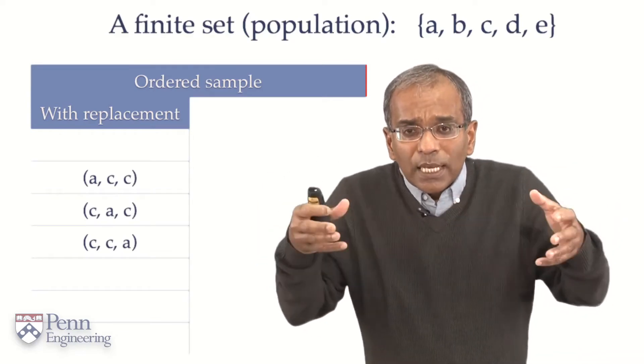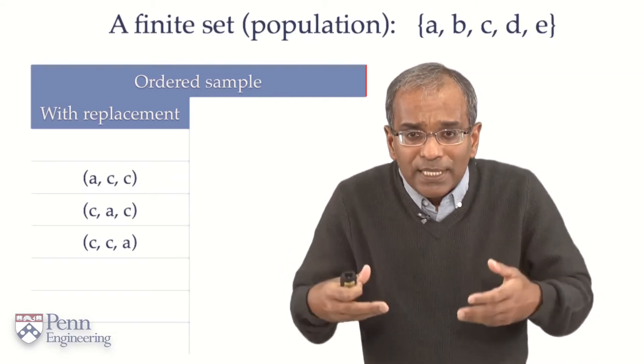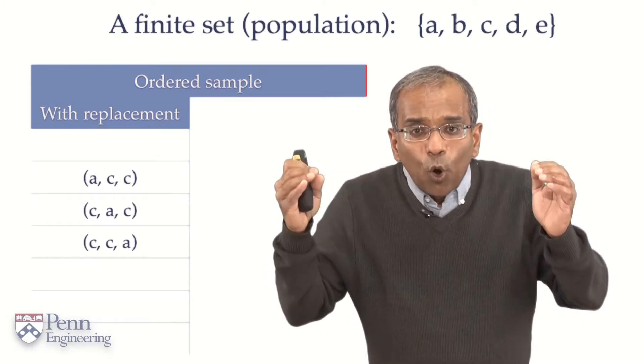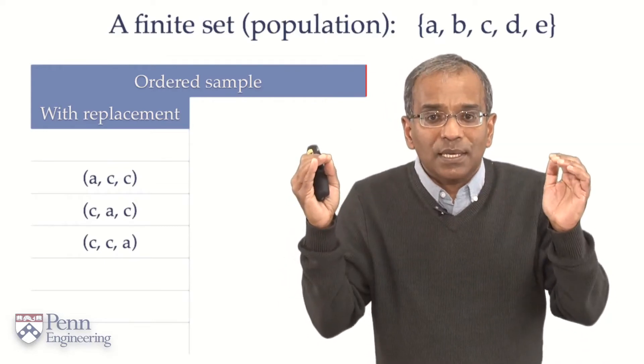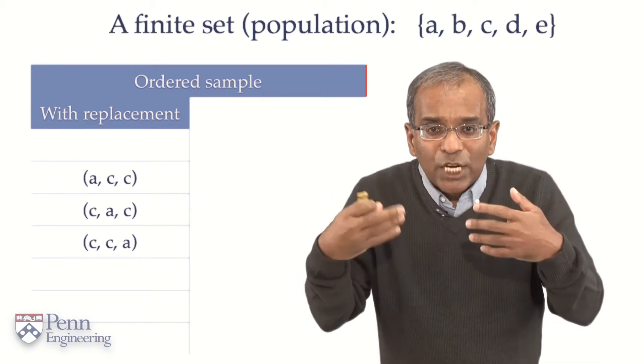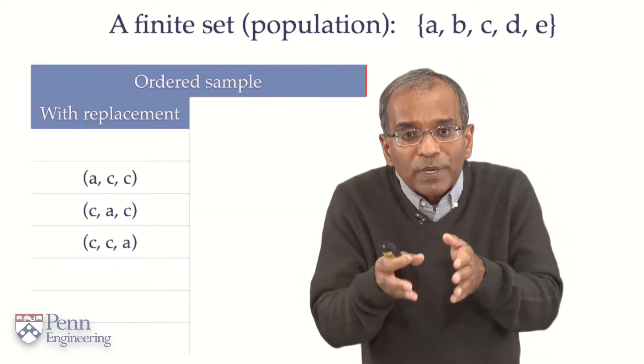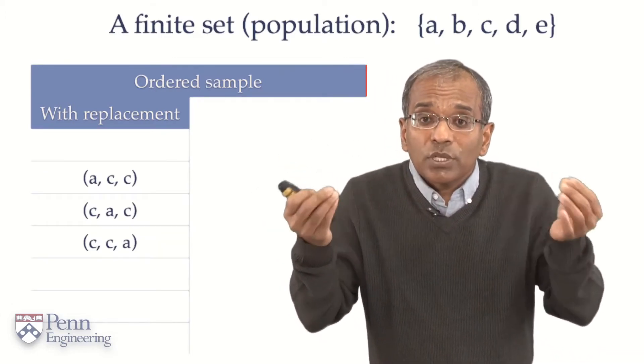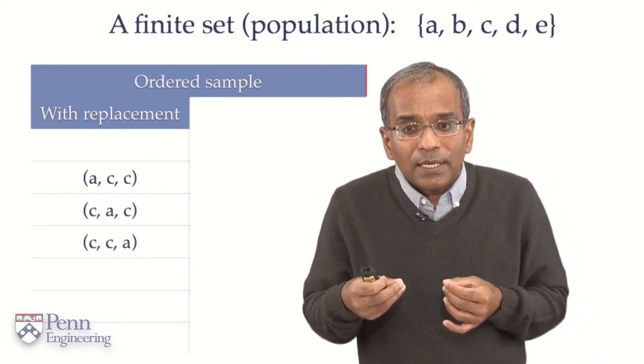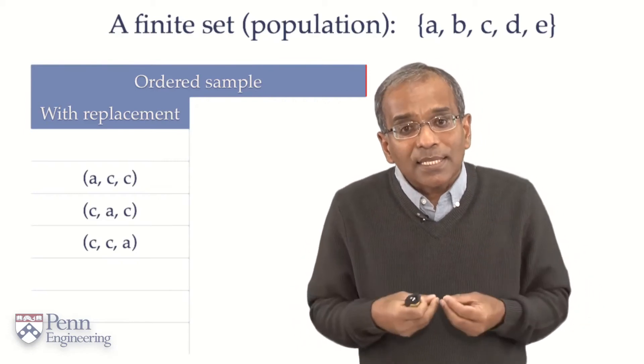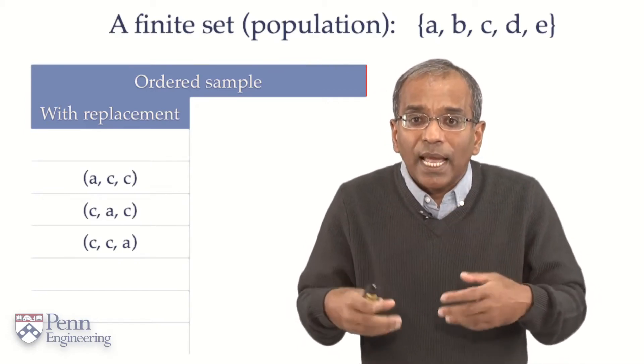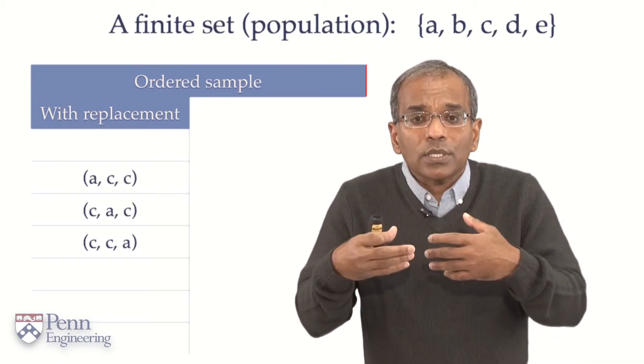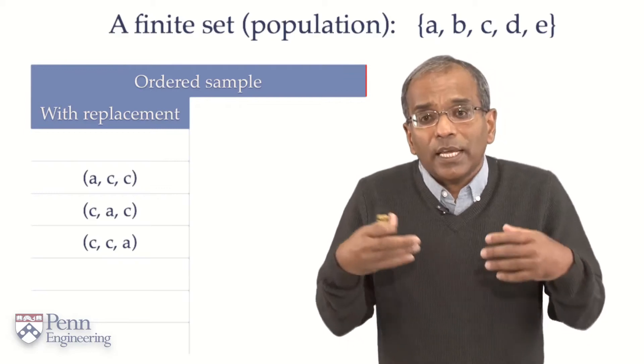Now, you notice that in this selection, I have selected the element C twice. But the order, in fact, makes a difference. And I make that explicit by putting the objects under a different kind of parentheses, round brackets. The round brackets are a visual indication that the order of specification matters. I have three different possible orderings of these two objects, A and C, chosen thrice. It could be A, C, C as in the first line, or C, A, C as in the second line, or C, C, A as in the third line.